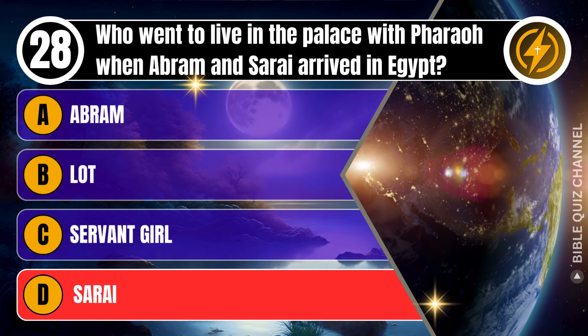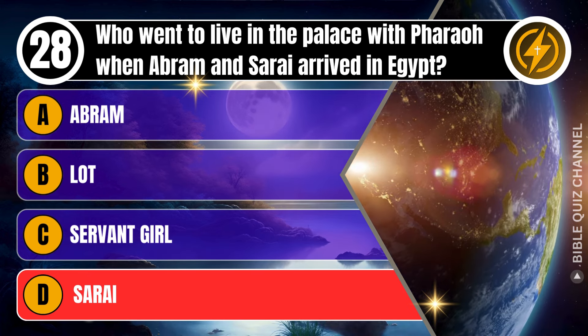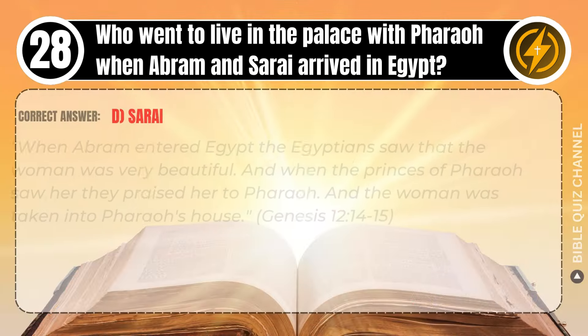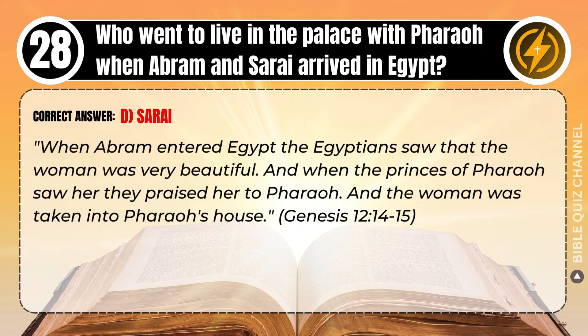Correct answer: D. Sarai. Explaining the Bible — When Abram entered Egypt, the Egyptians saw that the woman was very beautiful. When the princes of Pharaoh saw her, they praised her to Pharaoh, and the woman was taken into Pharaoh's house. Genesis, chapter 12, verse 14 to 15.